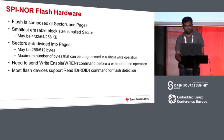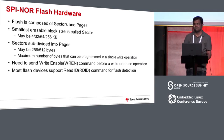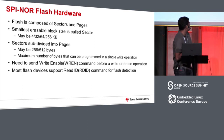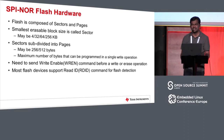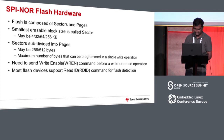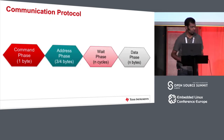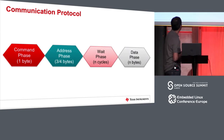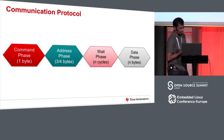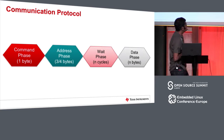Most flash devices support a read ID command, which is used to discover the flash. The read ID command is a JEDEC standard. Sending the read ID command, the flash will respond with the manufacturer ID, device ID, and unique ID of the flash, helping in discovering the flash in a unique way. A SPI transaction between SPI master and NOR flash has four phases: command phase, address phase, wait phase, and data phase.